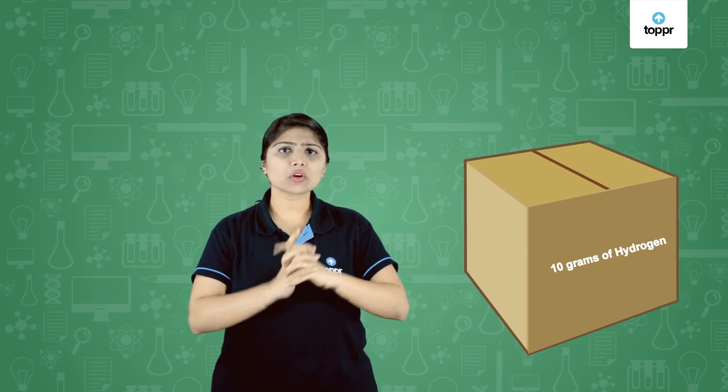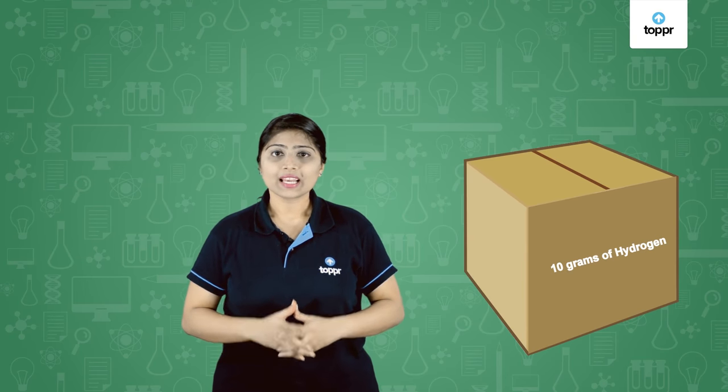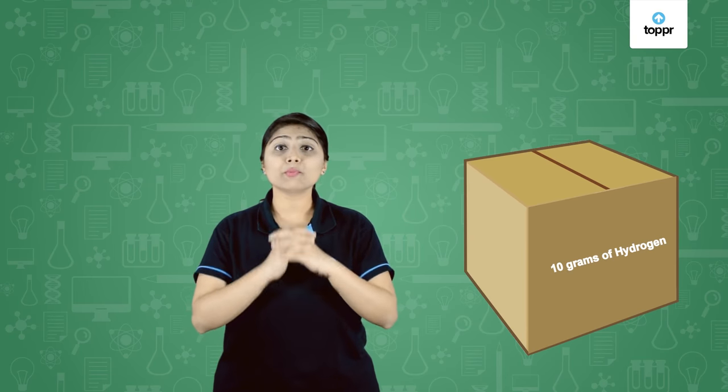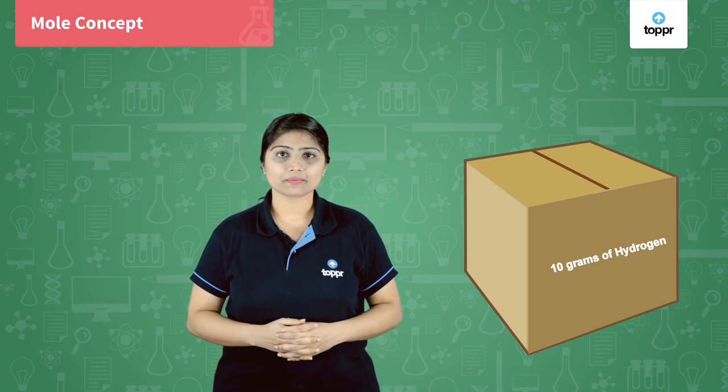Suppose if I have 10 grams of hydrogen in this box, how many atoms of hydrogen will be present in this 10 grams of hydrogen? This can be identified by a mole concept.